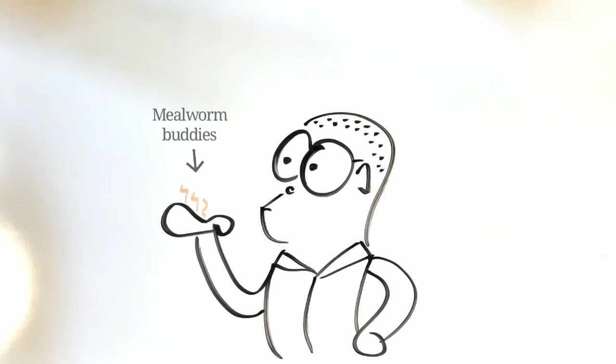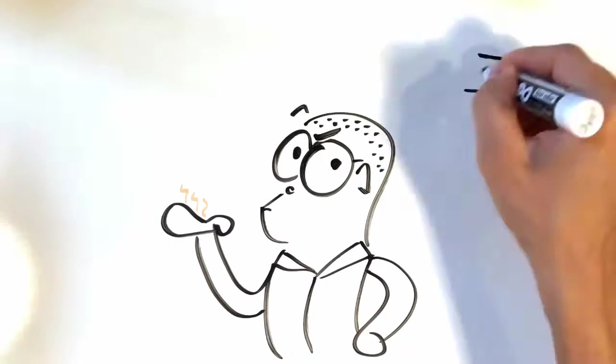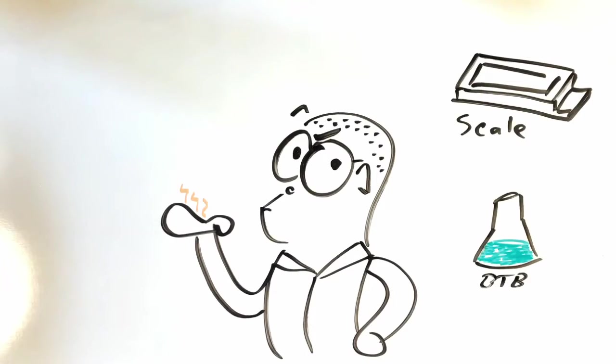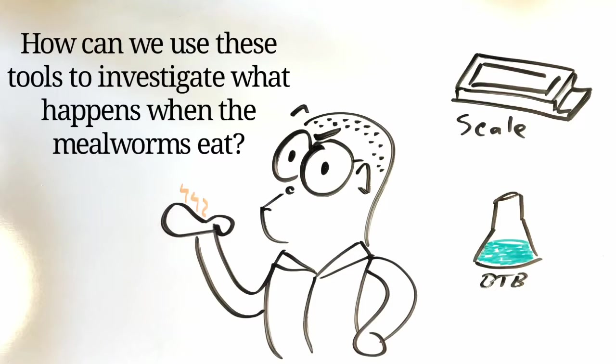Remember that the goal of this video is to model at the macroscopic scale what happens when an animal eats. How can we use our mealworms and these tools to figure out what happens? Take a moment to pause the video and use your imagination to figure out how we can use these tools to investigate what happens when the mealworms eat.